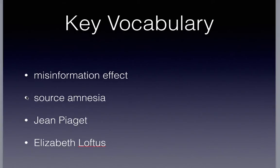Source amnesia — the famous example is from child psychologist Jean Piaget. We'll get to him a lot in the developmental psychology unit, unit nine, which is coming up. Source amnesia is where you forget where you learned that information or where the memory came from.